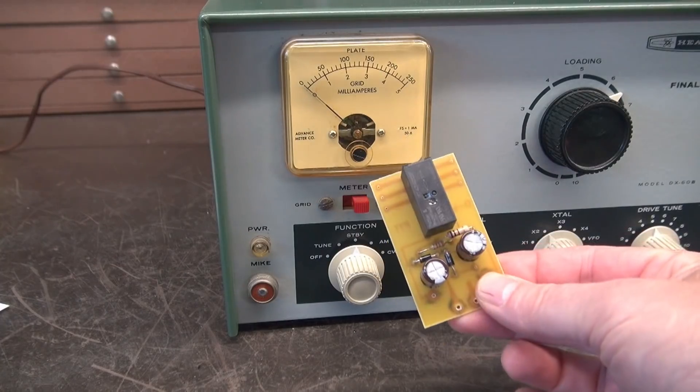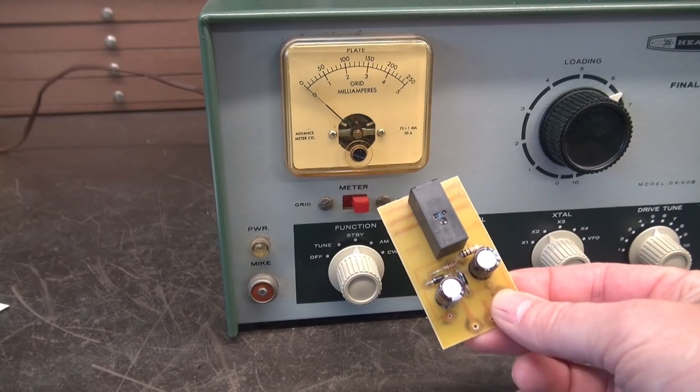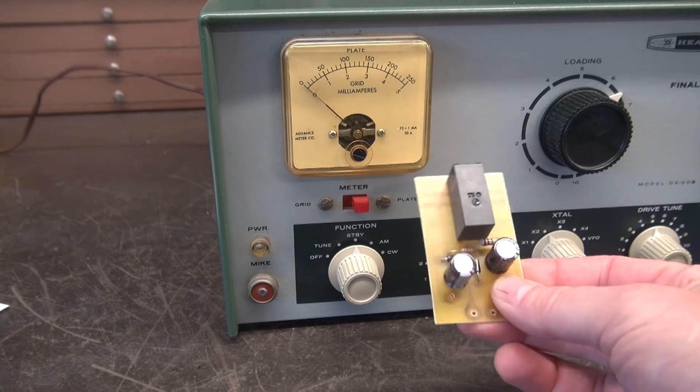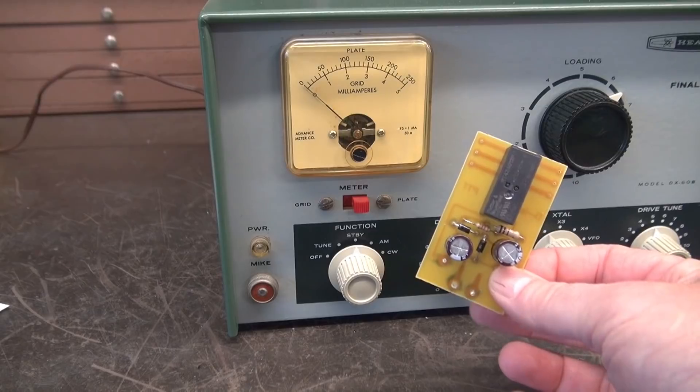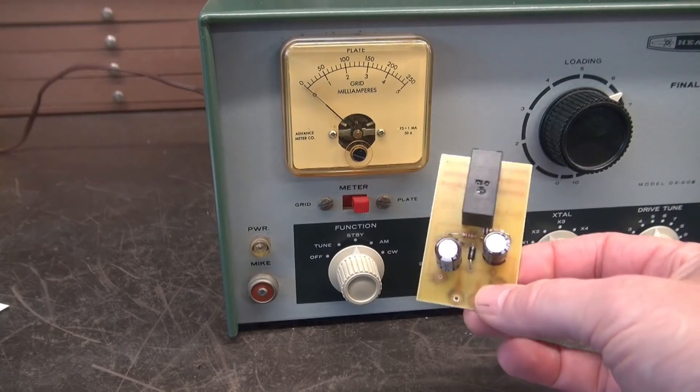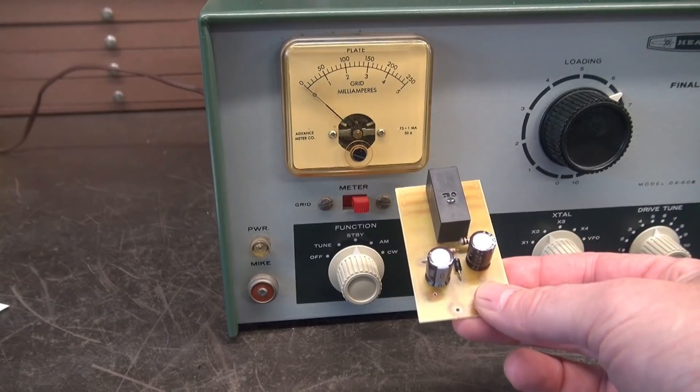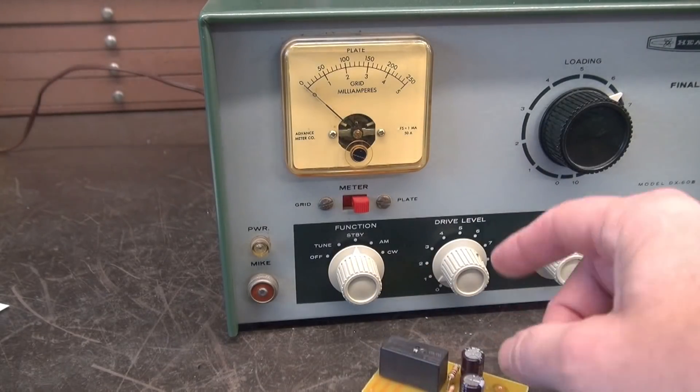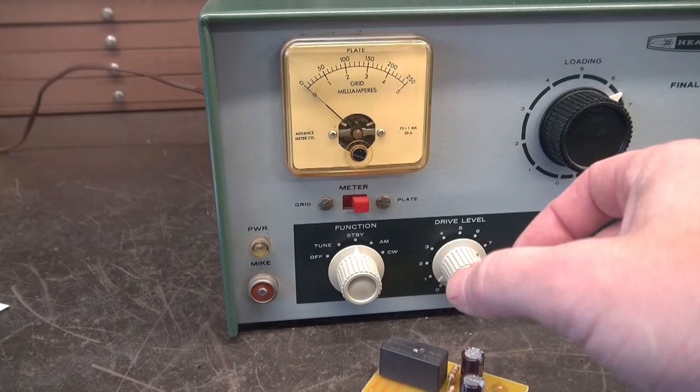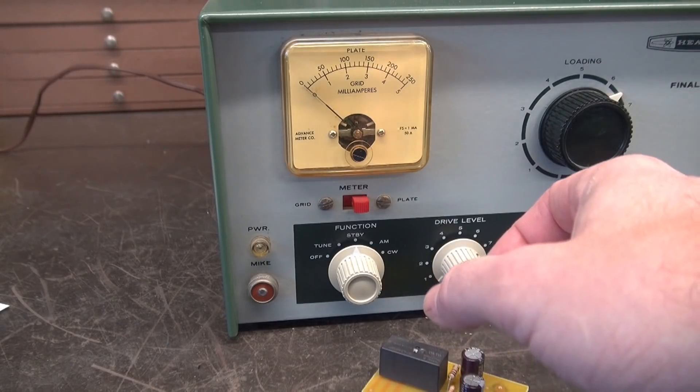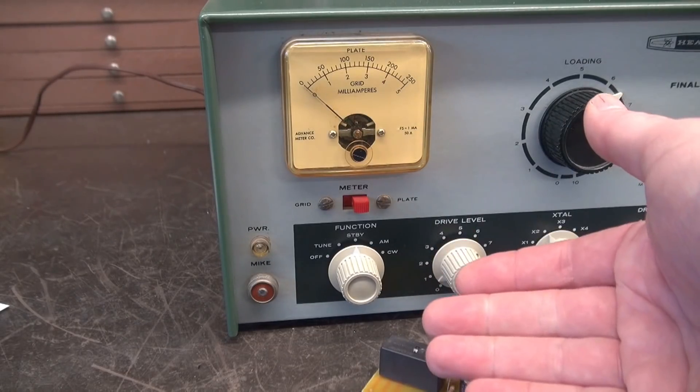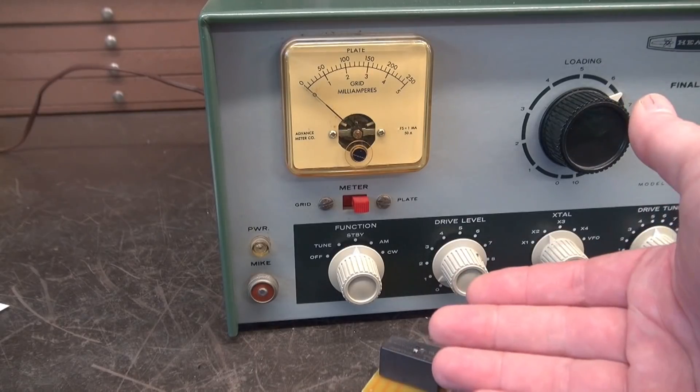Here's the K1 module that I'm going to install into the DX60. You can see this one does not have the octal socket. I'm actually going to mount this module underneath the chassis and hardwire it in. If you wanted an octal socket on your chassis you'd have to punch a hole, land the octal socket and then this could be installed similar to how it is in the Ranger.